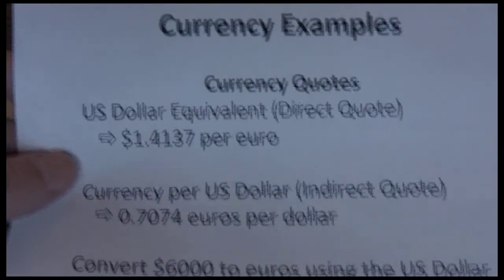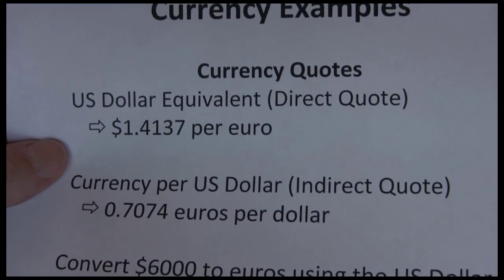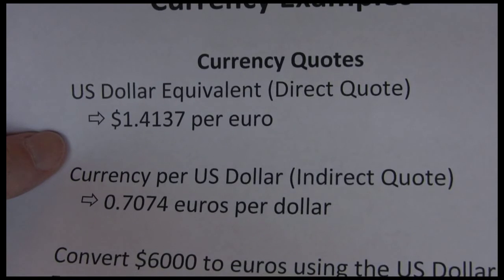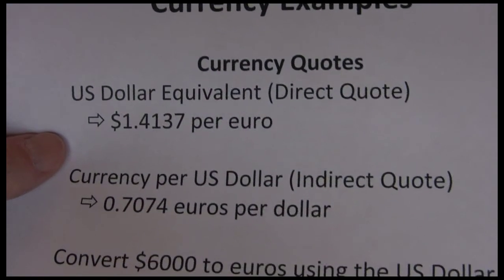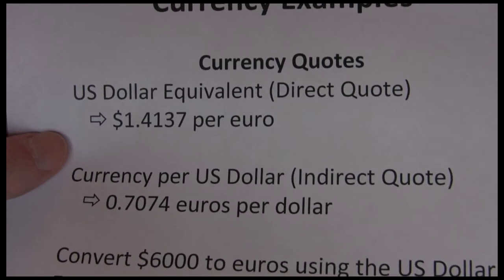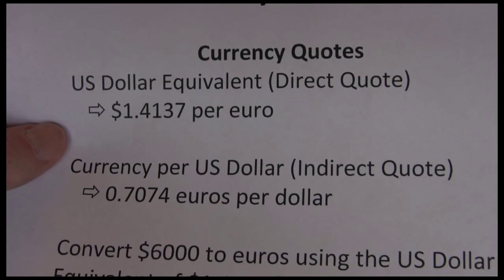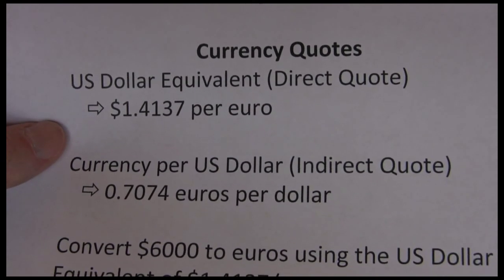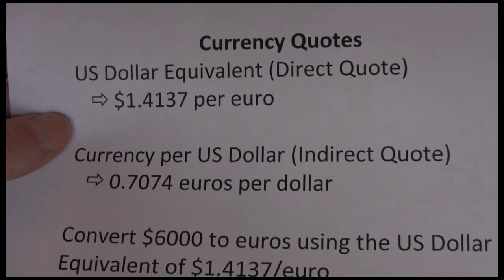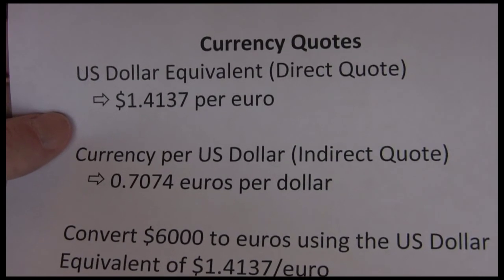The first common type of currency quote is sometimes referred to as the direct quote, or U.S. dollar equivalent. This states the number of U.S. dollars that we can buy per each unit of foreign currency. For example, at the time I'm recording this video, one euro can buy one dollar and 41.37 cents — that's the U.S. dollar equivalent: one euro equals what in U.S. dollars.